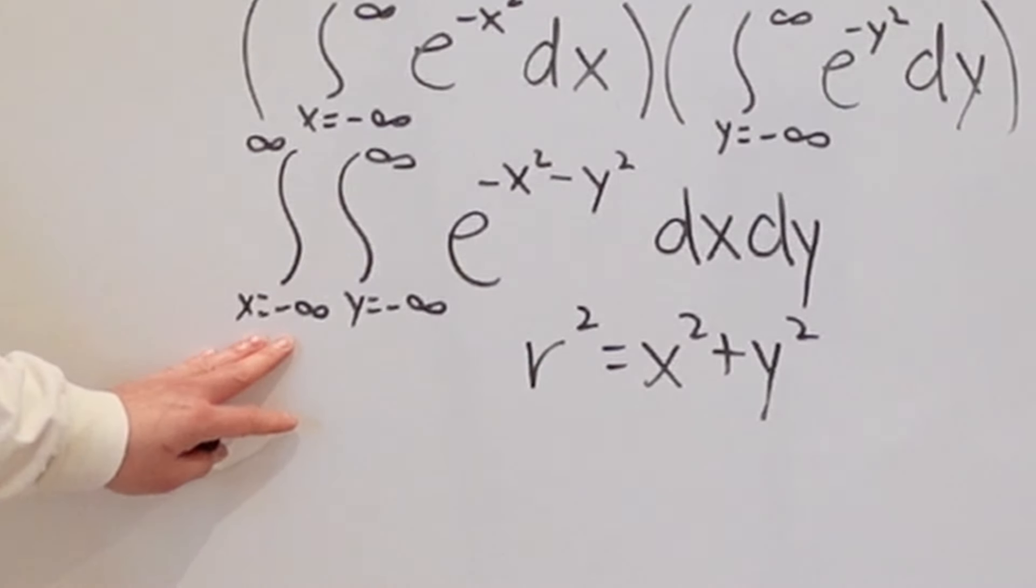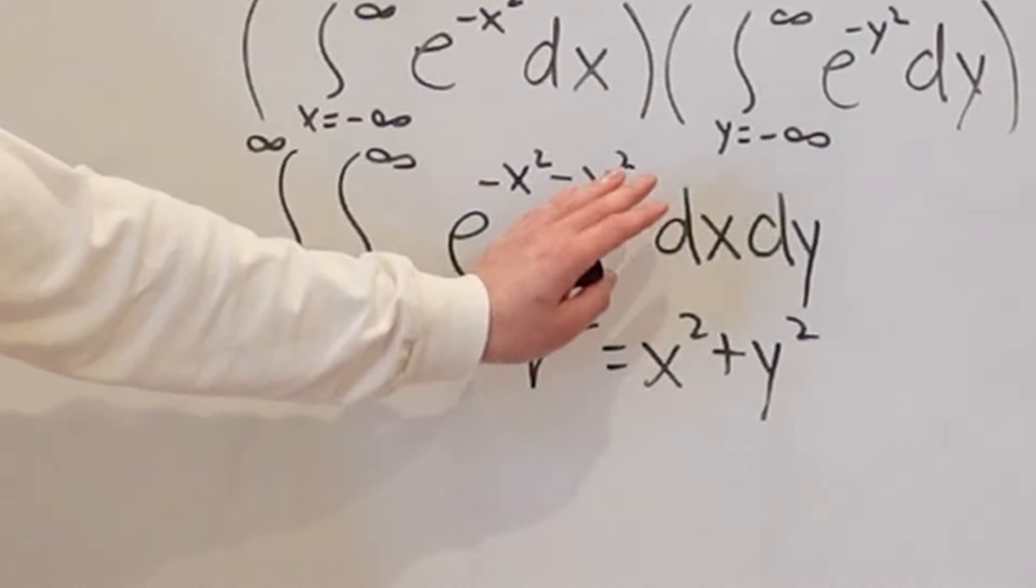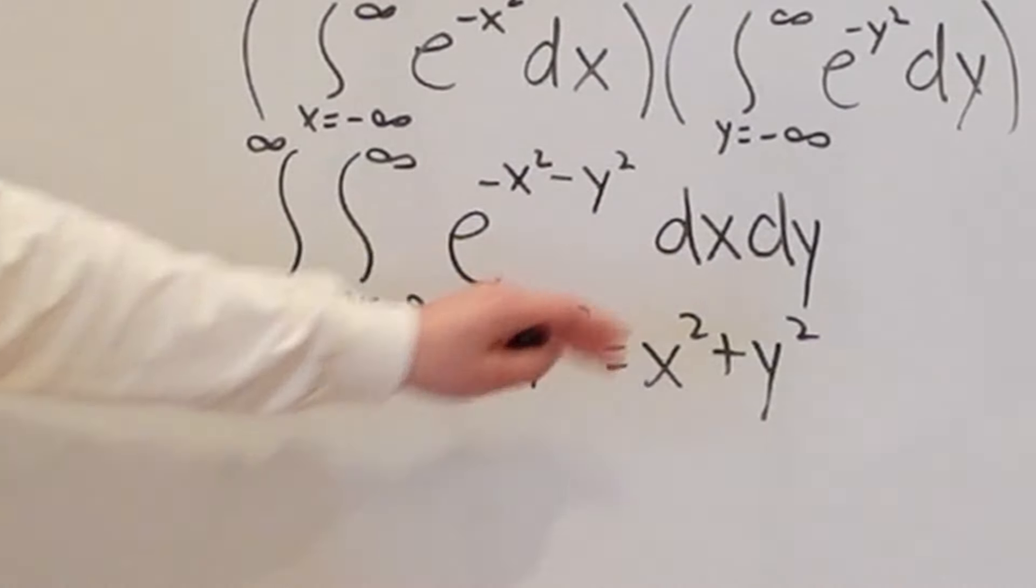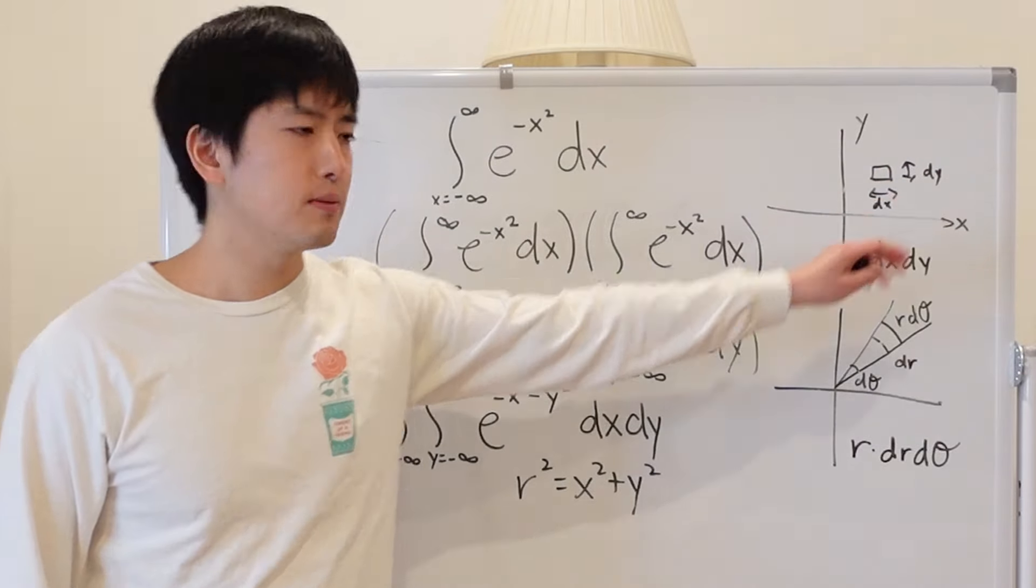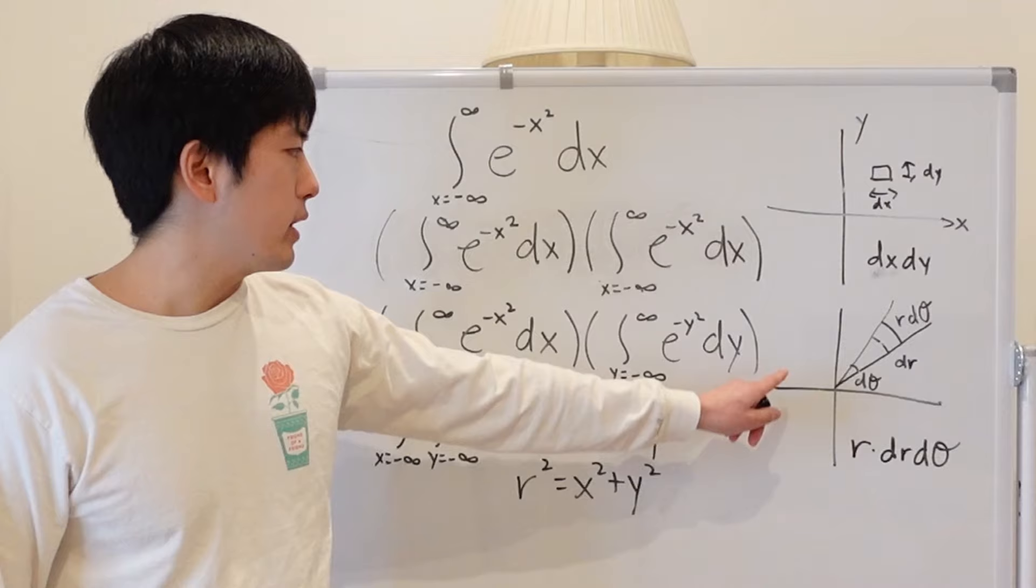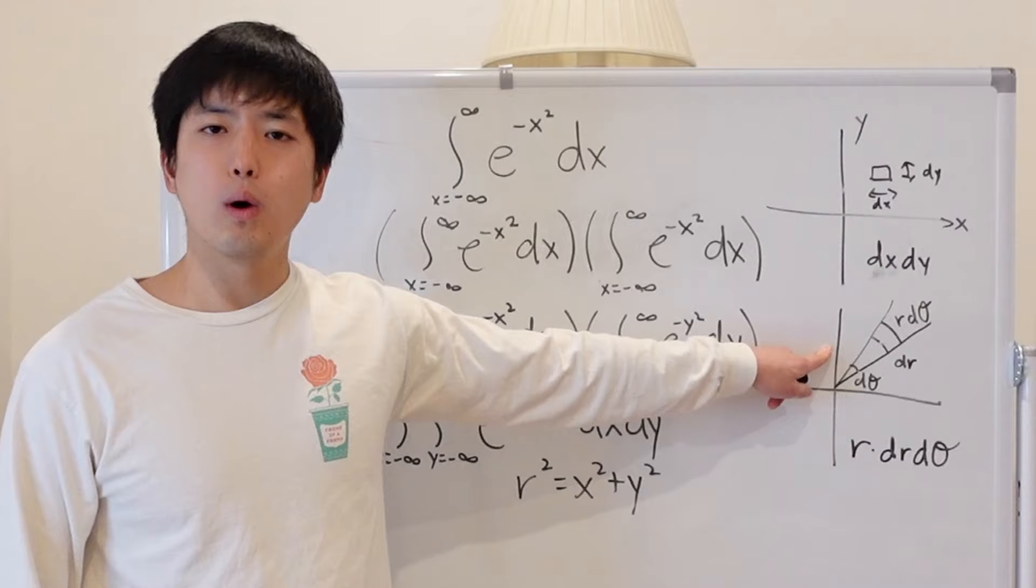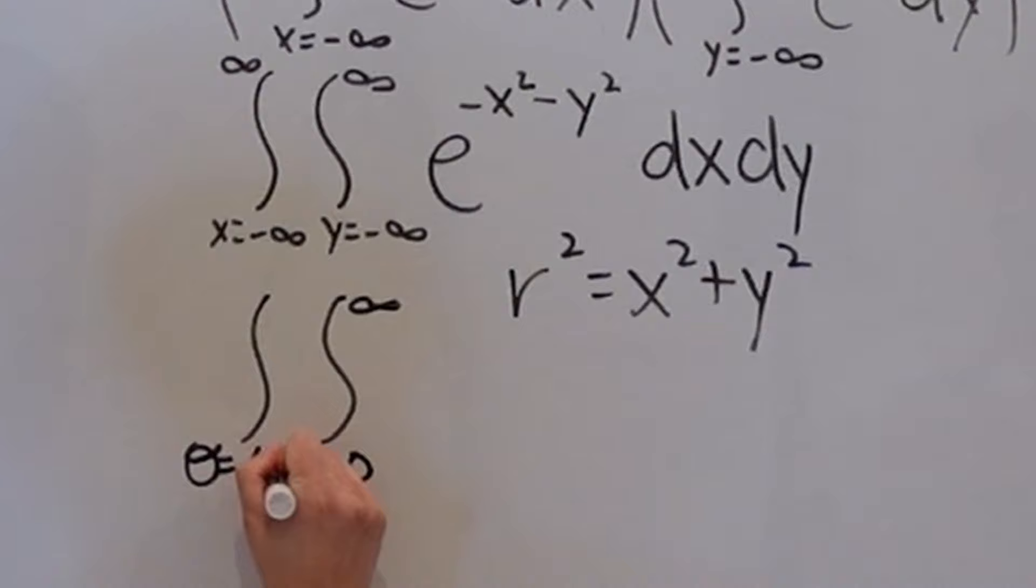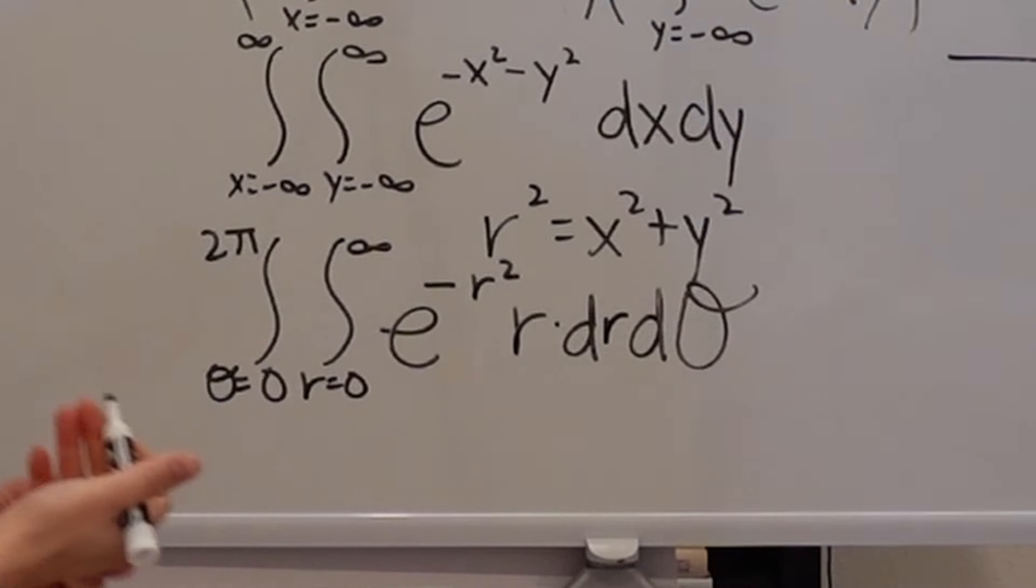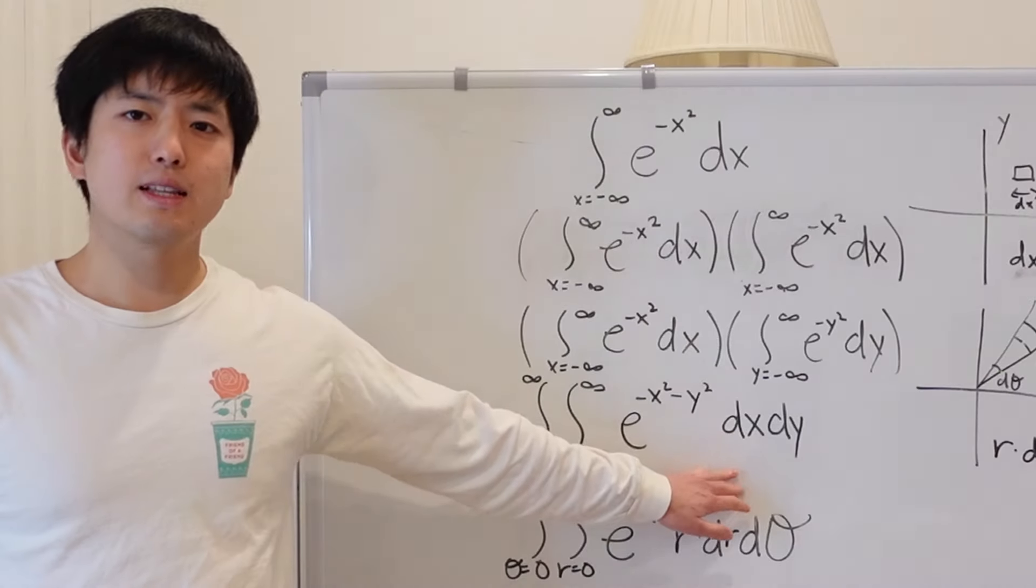Because I'm integrating from x to negative infinity to infinity and y negative infinity to infinity, I can make the necessary substitutions for r and theta in this expression. R will be integrated from 0 to infinity, because it's radius. And theta will be integrated from 0 to 2 pi for one revolution. I erase that just to make it cleaner.